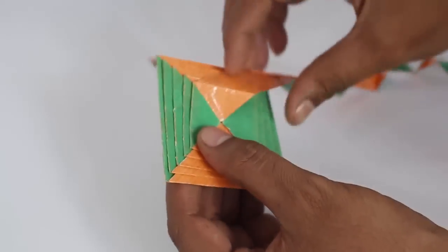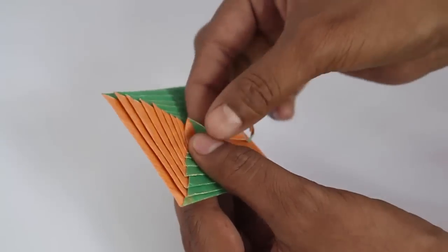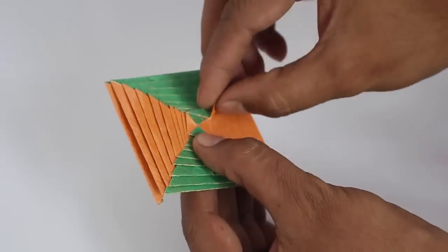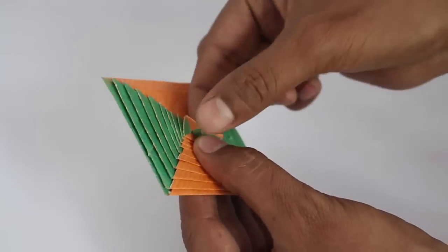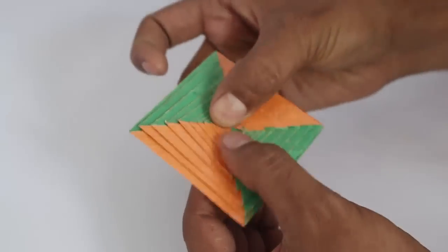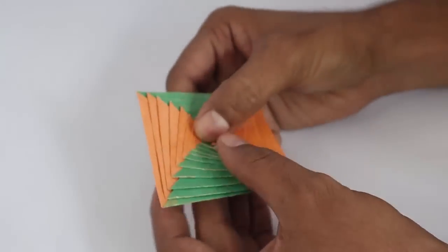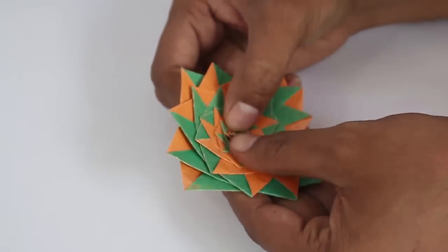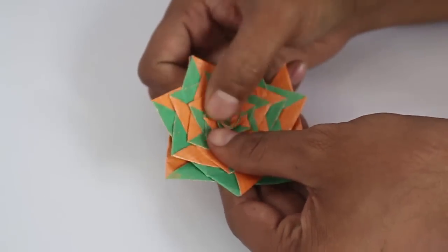Once you have reworked it, hold the model in your hands. Now try twisting the model with both your thumbs. The layers of the square will phase out and you will see a very beautiful pattern.